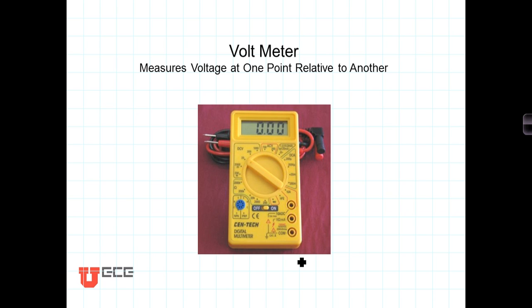Voltage is always measured between two points. When using a voltmeter, it has two terminals — typically the red terminal is placed on the higher voltage and the black terminal is placed on the reference voltage. You can measure the voltage between any two points in a circuit using a voltmeter.